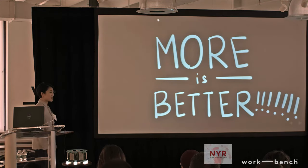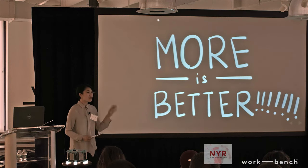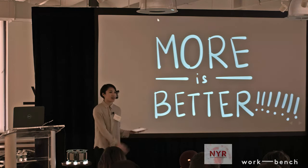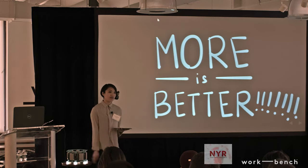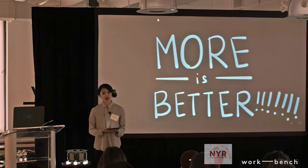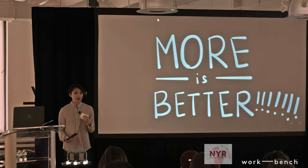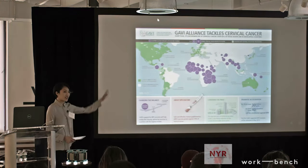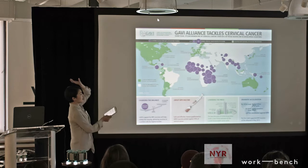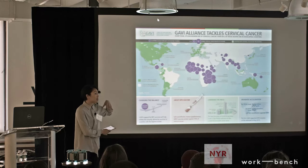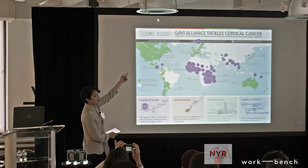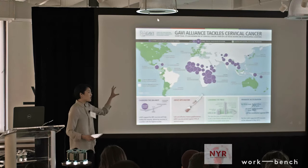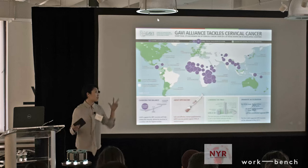The next issue I encounter all the time is that more is better. Especially in public health, this happens all the time because we want to be really politically correct and present all sides and empower people with all the information they need. But what that often translates into is just way too much stuff on your visualization. There's so many layers of information that your story message gets watered down. The message here is Gavi, a vaccine alliance, tackles cervical cancer. That's a strong message, but looking at it, you don't immediately get that feeling of 'tackle.'